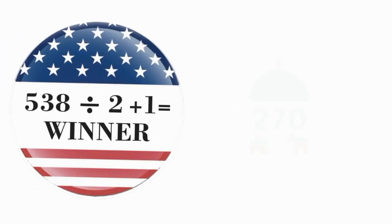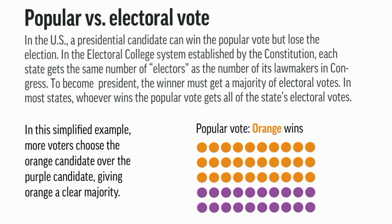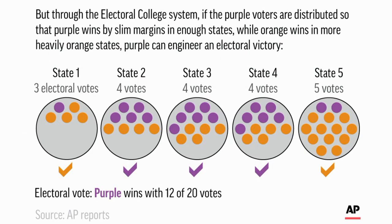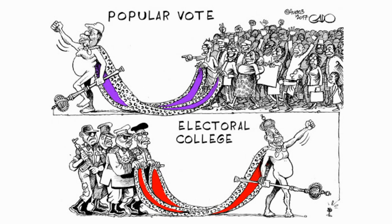To become president, a candidate needs 270 electoral votes out of the total 538. Even if the majority of the people of the U.S.A. voted for a candidate, that does not mean he or she will win the presidential election. A candidate winning the majority of the popular vote might not win a majority in the Electoral College. For example, in the year 2000, Democratic nominee Al Gore won more popular votes than Republican nominee George W. Bush. But Bush won 271 Electoral College votes compared to 266 for Al Gore, and as a result, Bush became President despite having fewer popular votes.